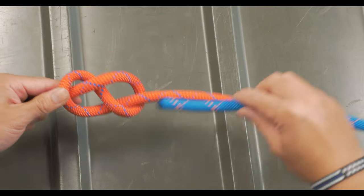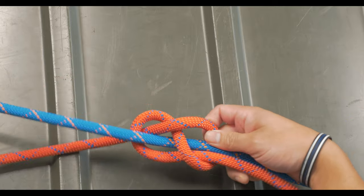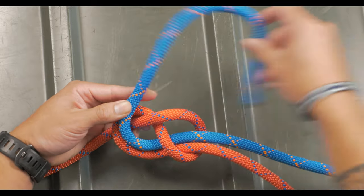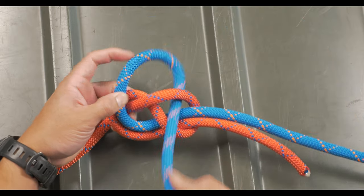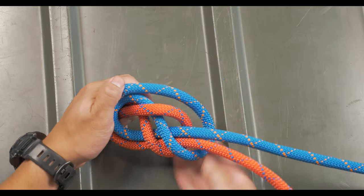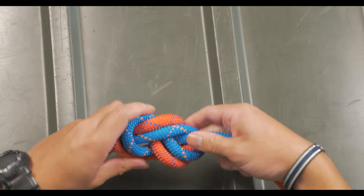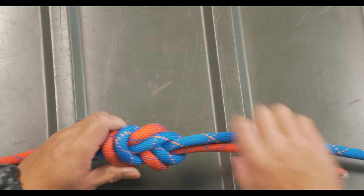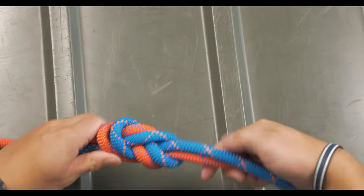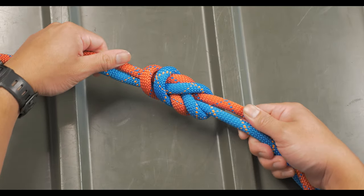The working end of the second line follows the line of the figure eight, starting from the working end. The finishing knot should be neat without any crossing lines. You can do an overhand knot around the standing end to finish the ends if you'd like. This helps secure everything and it's also referred to as a safety knot.